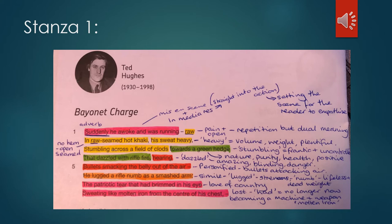Then we have he lugged a rifle numb as a smashed arm. This is a simile to describe his rifle as being numb like a smashed arm. Now if you have a smashed arm it means that it's useless, it's redundant. And here his rifle is described as being like a smashed arm. And therefore it's lugged so it's strenuous, it's painful and heavy for him to carry. But also it's numb so it's lifeless, it's a dead weight which tells us that the bullets are redundant. And therefore he only has his bayonet up for close encounter fighting.